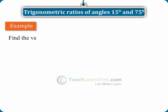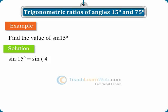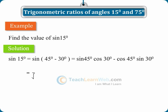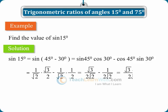Example 3: Find the value of sin15°. Solution: sin15° equals sin(45°−30°), which equals sin45°·cos30° minus cos45°·sin30°, which equals (1/√2)·(√3/2) minus (1/√2)·(1/2), which equals √3/(2√2) minus 1/(2√2), which equals (√3−1)/(2√2). Therefore, sin15° equals (√3−1)/(2√2).